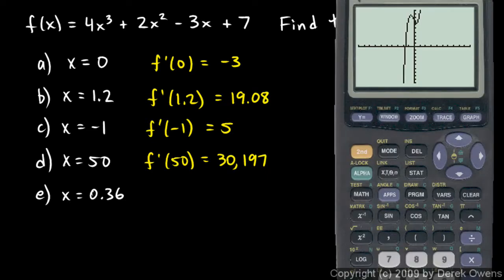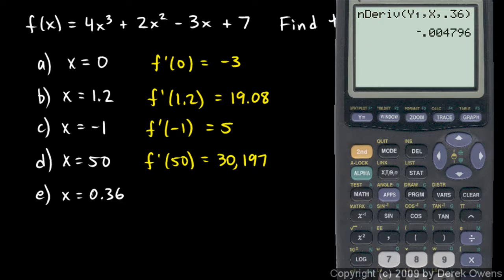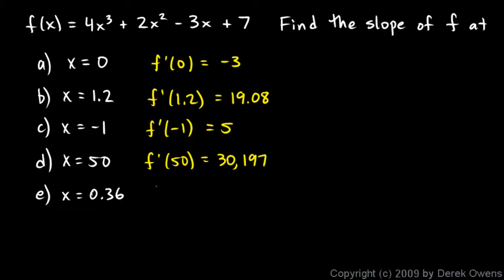And then one more, x equals 0.36. So let's do the numerical derivative and just type in 0.36. So the numerical derivative of the function in y1 when x equals 0.36, it gives me negative 0.004796, so that's approximately 0. I'm going to say f prime of 0.36 is approximately 0.